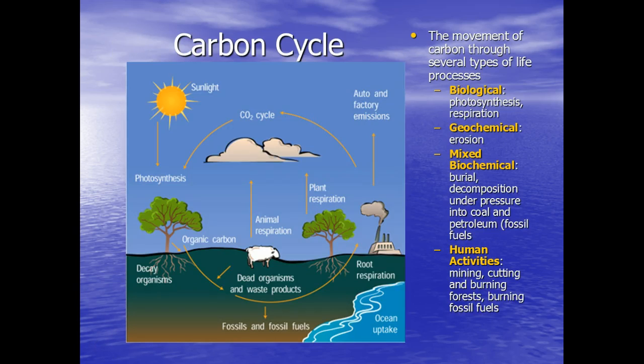The first nutrient cycle that we are going to go through is the carbon cycle, which is the movement of carbon through several types of life processes. You have biological, which is photosynthesis within plants and respiration, which is transfer of gas within any organism. You have the geochemical, which is erosion. You have mixed biochemical, which can happen when the carbon is buried. So whether the carbon source is something dead or not, it is buried under pressure, and it turns into coal and petroleum, which are fossil fuels.